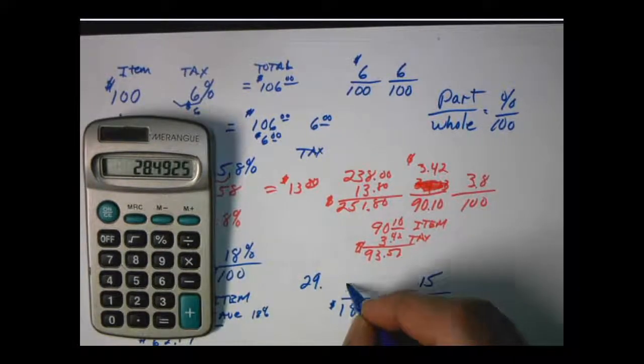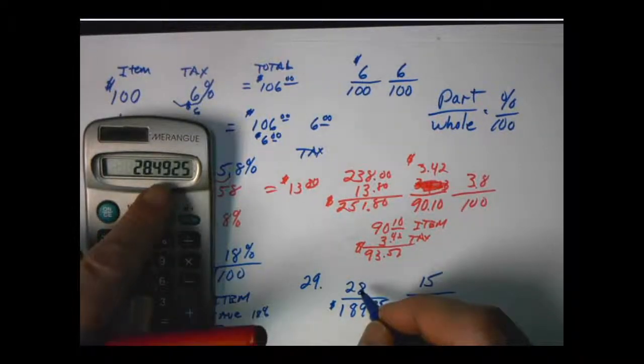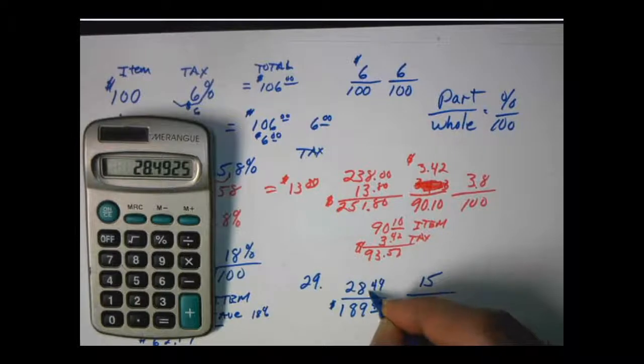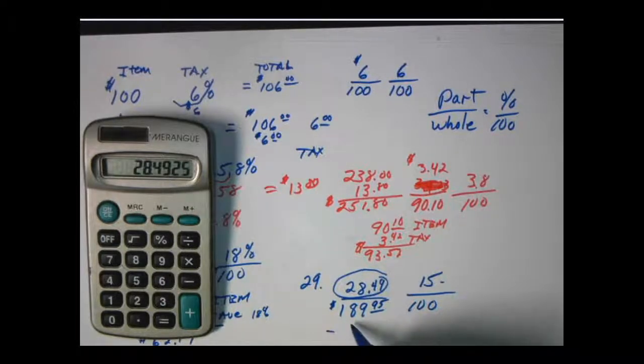So we're going to save $28.50. This is $28.49. Now let's just leave it that way. $28.49. We won't round up. So that's what we're going to save because that's that 15%. Then we need to subtract it from the item.